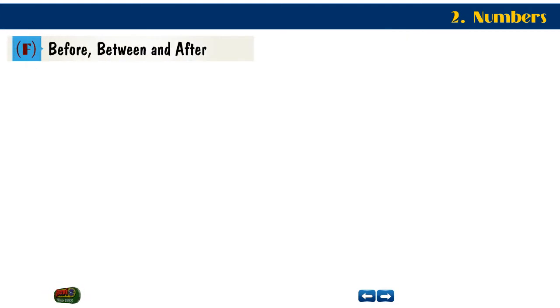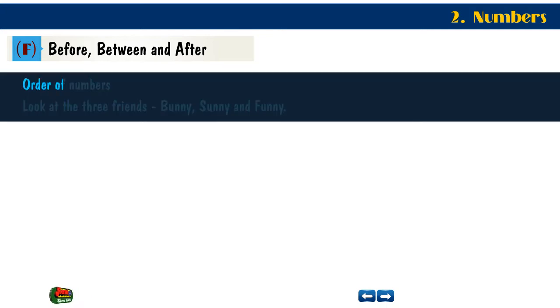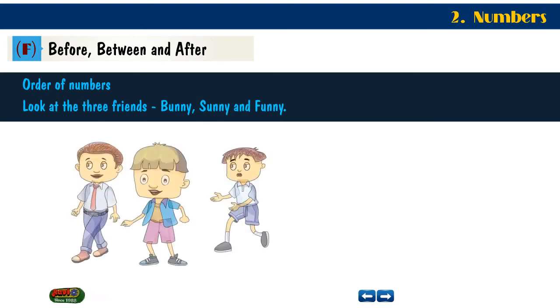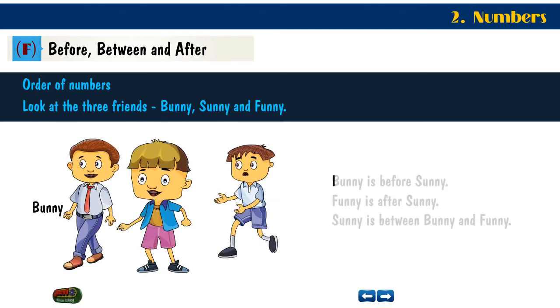Before, Between and After. Order of Numbers. Look at the three friends: Bunny, Sunny and Funny. Bunny is Before Sunny. Funny is After Sunny. Sunny is Between Bunny and Funny.